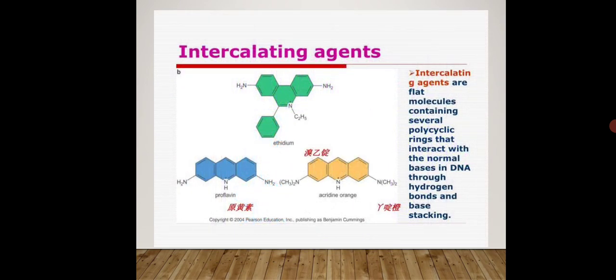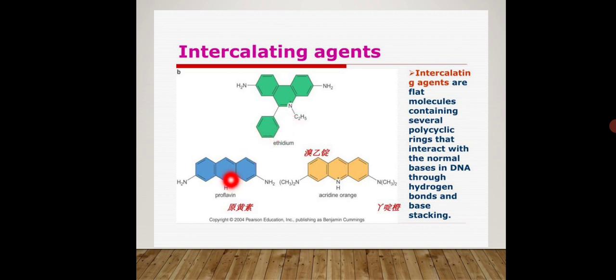So what are these intercalating agents? These are flat molecules which contain several polycyclic rings that interact with the normal bases in the DNA through hydrogen bonds and base stacking. The meaning of intercalate is to insert. These intercalating agents are flat in structure and they consist of different polycyclic rings.